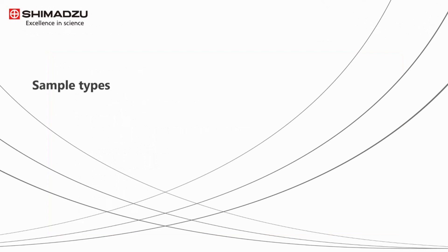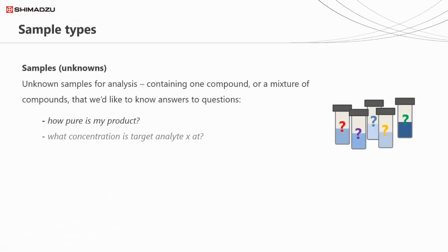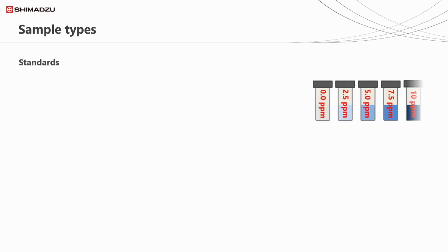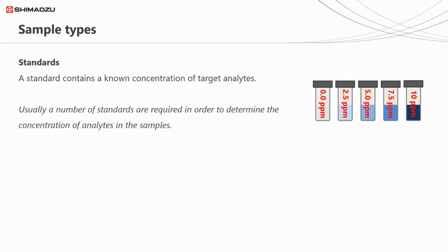Let's begin this session's technical content by looking at sample types. Obviously, we have our samples themselves, which are also referred to as unknowns. These samples contain a compound or compounds that we'd like more information about — that might be information on sample purity, knowing how much of a compound is in our sample, or determining if a compound is present. In order to answer these questions, we need samples where the content is known, and these are known as standards.